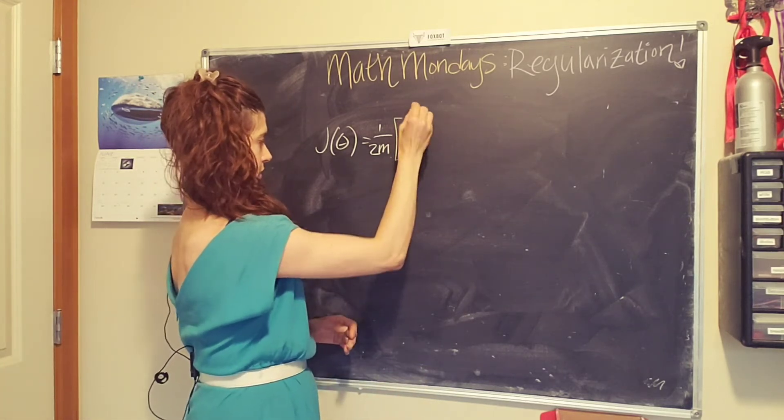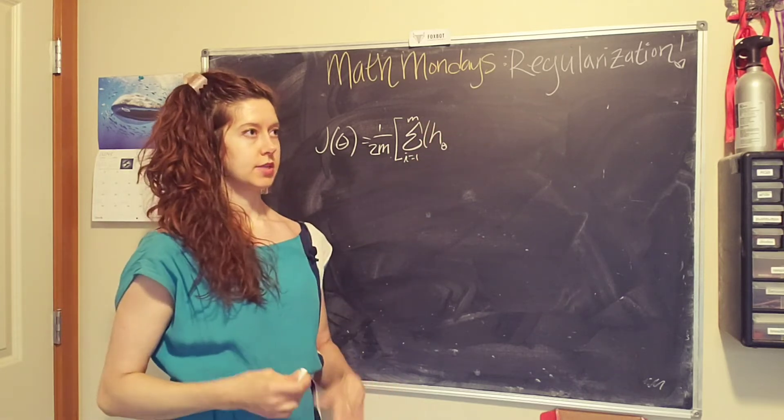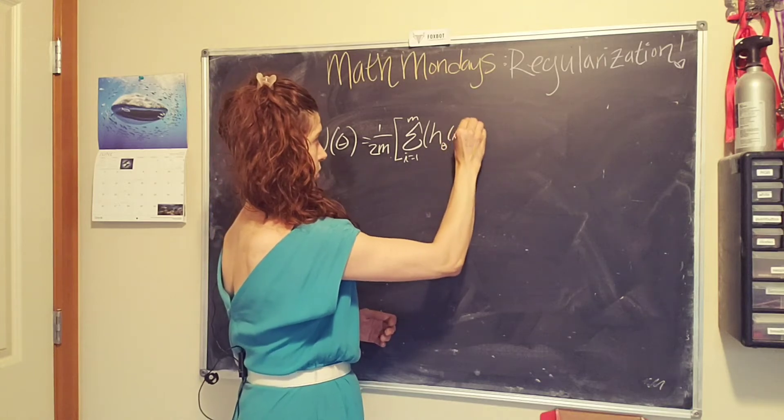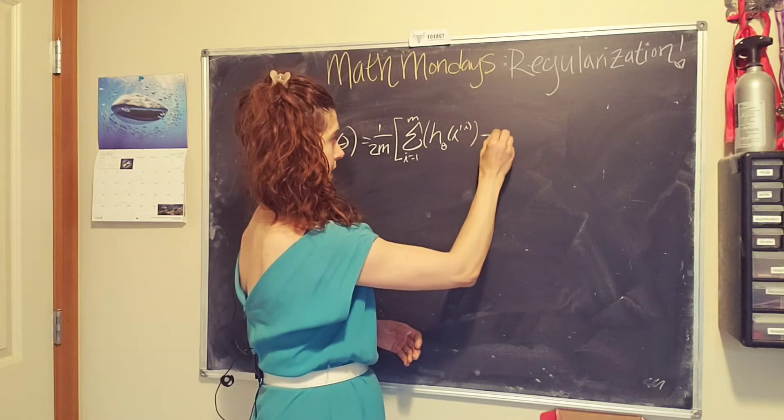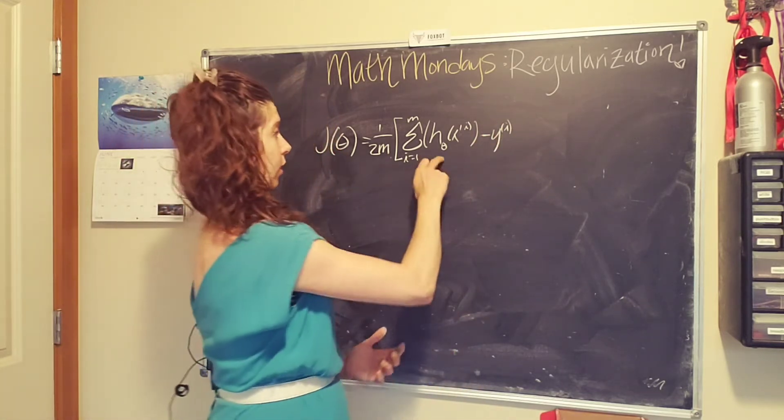We're going to sum over all of our data points and we are going to take the difference between our predicted value that's given by our hypothesis function and subtract the actual value to figure out how accurate our hypothesis is.